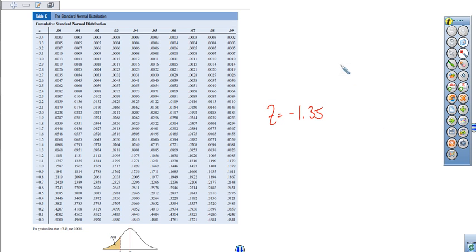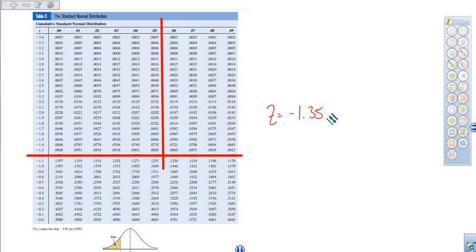We'll start off and find the area for z = -1.35. On our chart here, we go to negative 1.3, then come over to the 5. We're looking at a percentage of 0.0885, which is 8.85%. For me, that's just easier to work with. I like using the percent instead of the decimal.